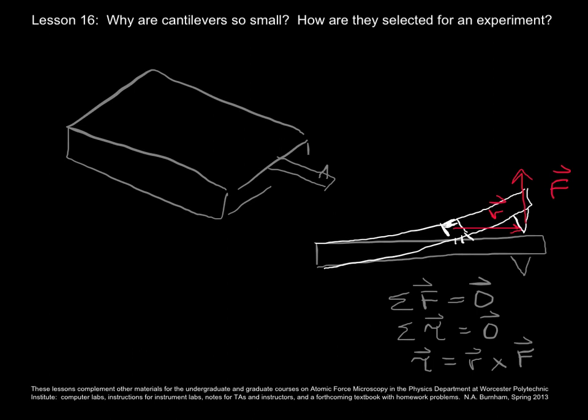After all that, what you end up with is that the spring constant in the direction normal to the surface of the sample is equal to the elastic modulus times the width of the cantilever times the cube of the thickness of the cantilever divided by 4 times the length of the cantilever cubed. This is for a rectangular cross-section of a cantilever, the ones that look like diving boards.